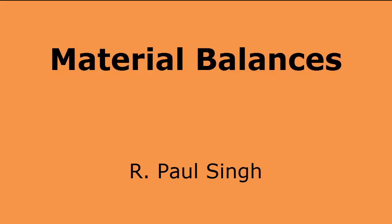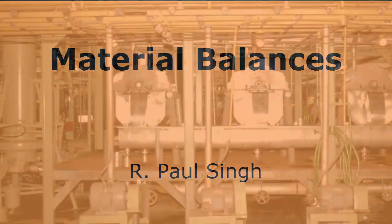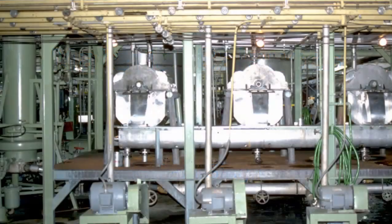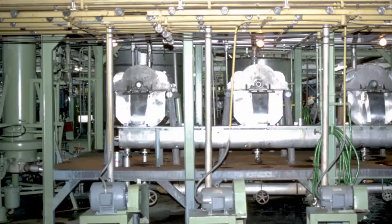If you walk into a food processing plant, something that you will immediately notice is that there are a number of pieces of equipment being used for a variety of different processes: equipment for drying, filtration, mixing, evaporation, and so on.